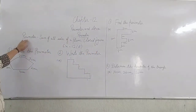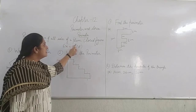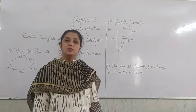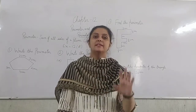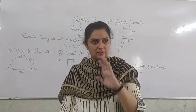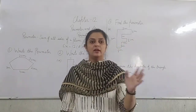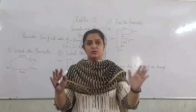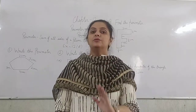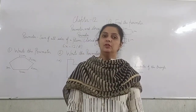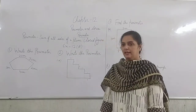So first, what is perimeter? Perimeter is the sum of all sides of a plain closed figure. Any plain figure, like a triangle, quadrilateral, pentagon, hexagon, or any closed shape made of straight lines — if we want to find its perimeter, we will add all its sides together.